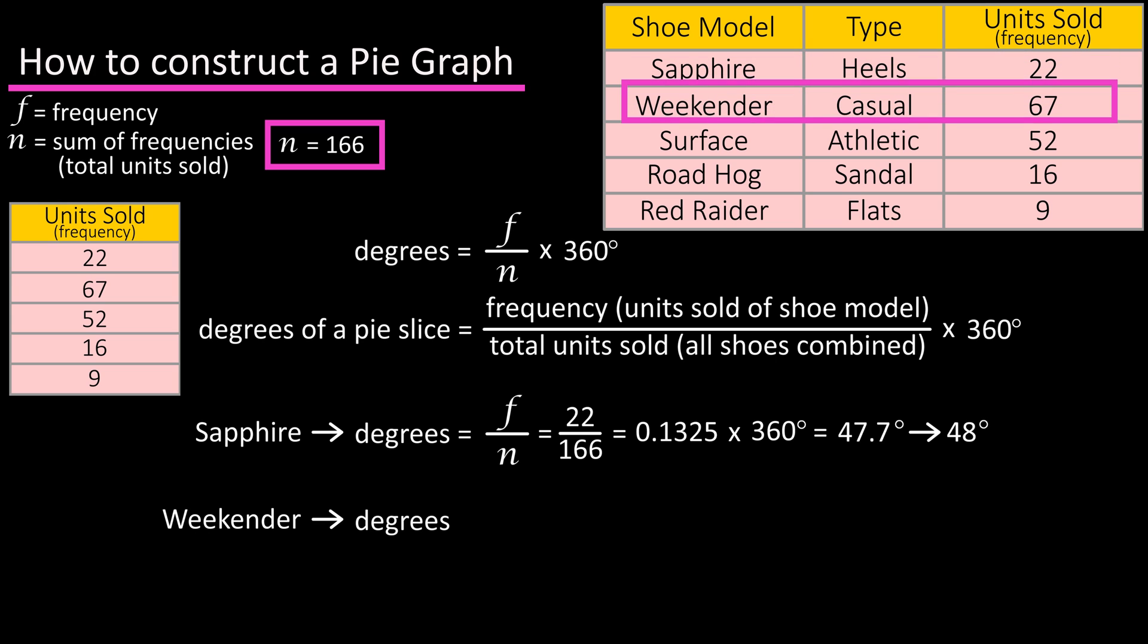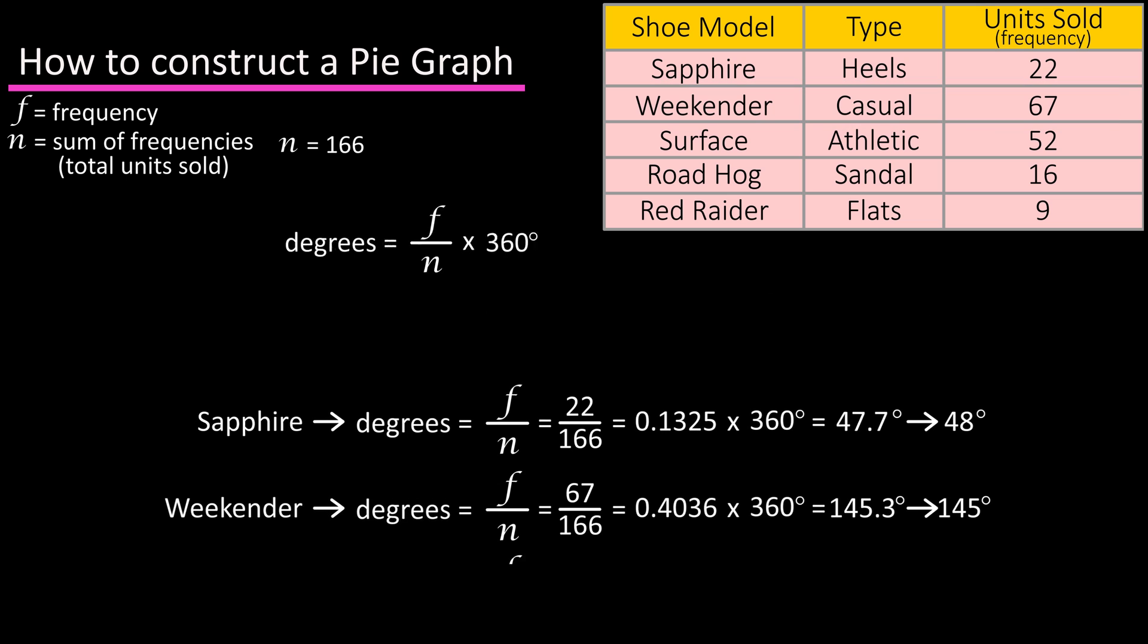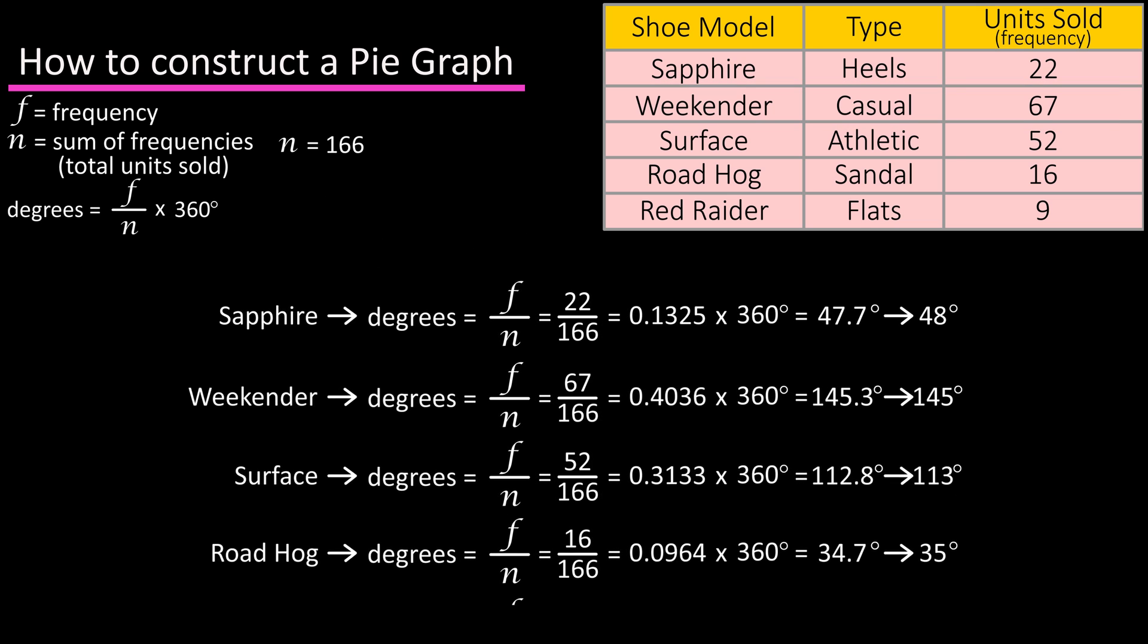Next, we'll do the same process for the weekender shoe. So 67 sales for this shoe, divided by the total of 166, equals 0.4036. Multiply that by 360 degrees to get 145.296, which we can round off to 145 degrees. And we'll do this for the remaining three shoes, as you can see here.